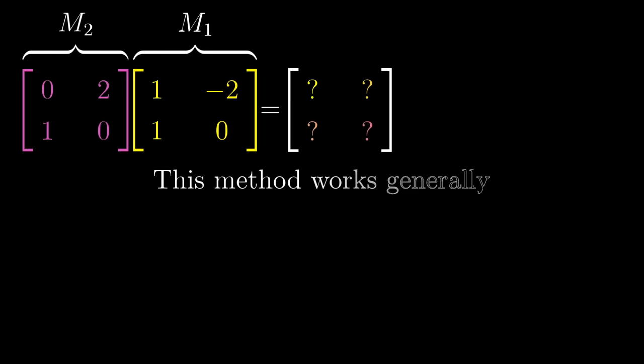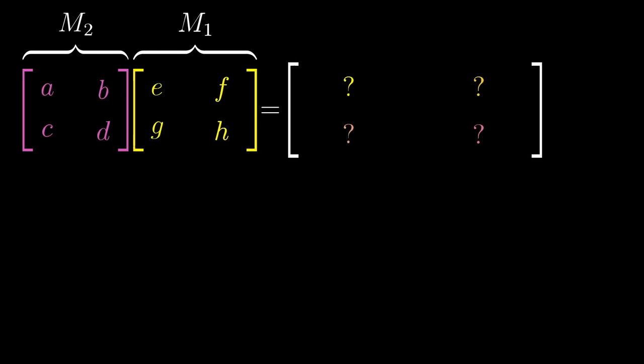Let me talk through that same process again, but this time I'll show variable entries in each matrix, just to show that the same line of reasoning works for any matrices. This is more symbol-heavy and will require some more room, but it should be pretty satisfying for anyone who has previously been taught matrix multiplication the more rote way.